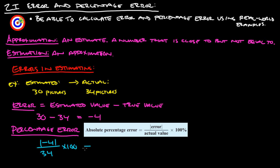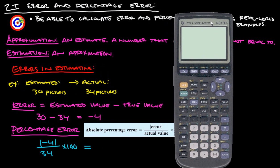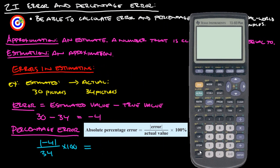When you calculate this all out, the absolute value of negative 4 is 4, so we take 4 and divide it by 34, and then multiply that by 100, or basically just move the decimal over two spots.